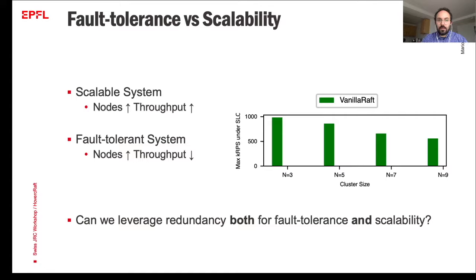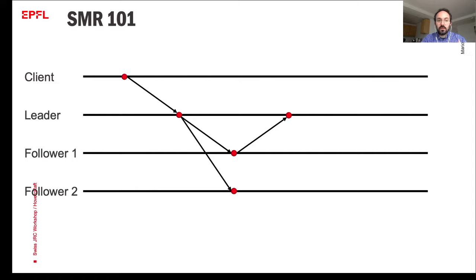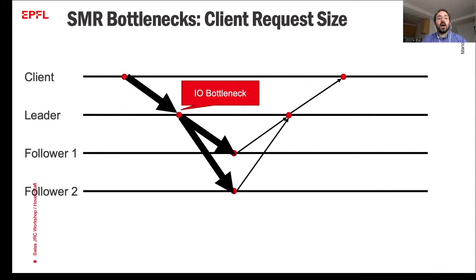To answer this, we take a closer look at Raft's communication pattern. We have a client, a leader, and two followers, meaning we can tolerate one failure. When the client sends an RPC, it first goes to the leader, who is in charge of replicating it to the two followers. The followers reply back to the leader, and once quorum is collected the leader executes the RPC and sends the reply to the client. This pattern can suffer from different bottlenecks. The first appears with large client requests: the leader must replicate those large requests, causing an I/O bottleneck at the leader.